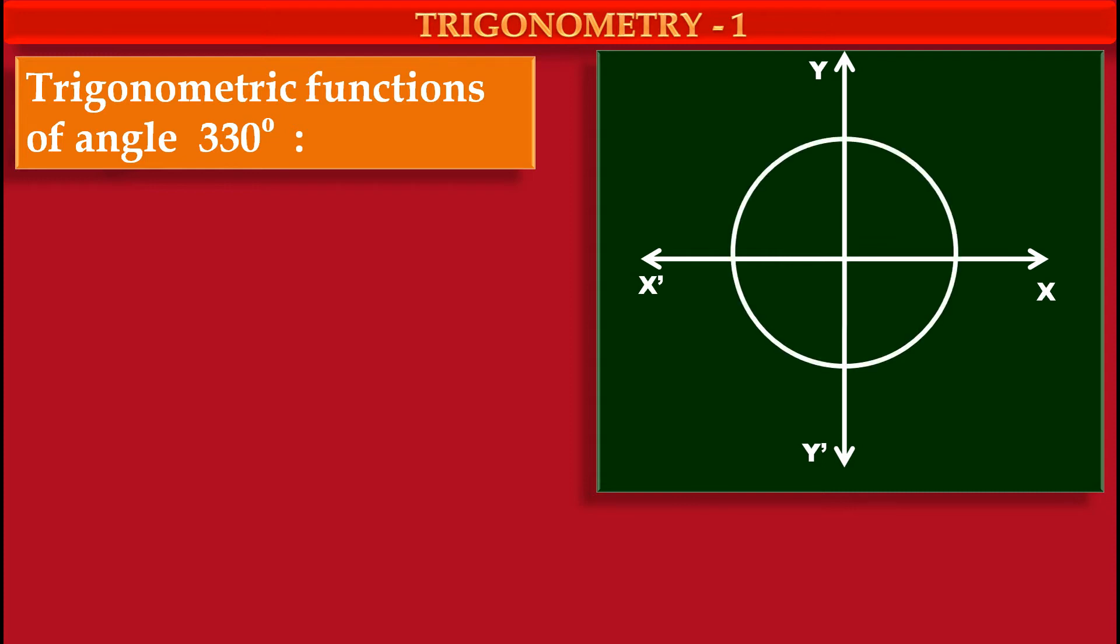Now we have to draw a standard unit circle. This circle is standard because its center is at the origin having coordinates (0,0). And it is unit because its radius is 1 unit. That's why it is known as standard unit circle.